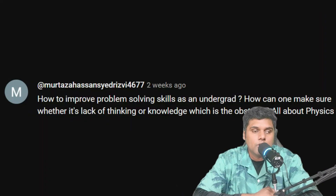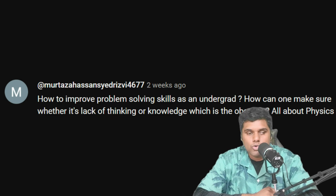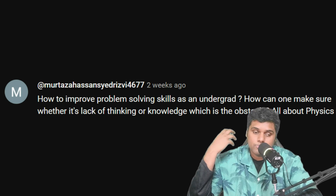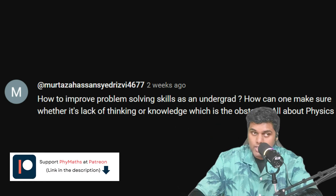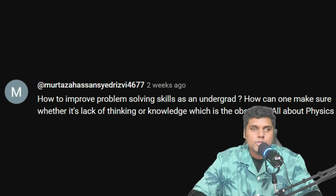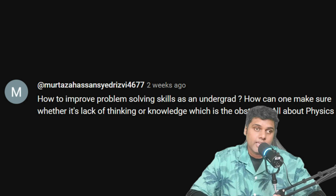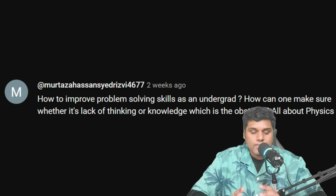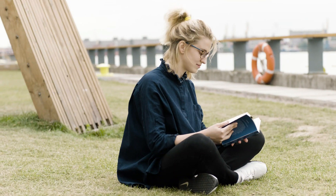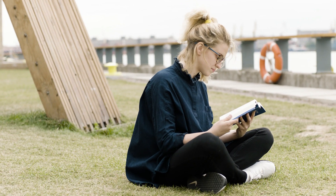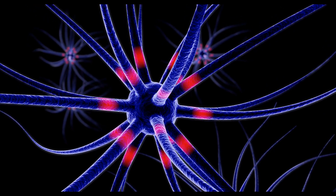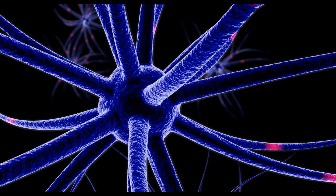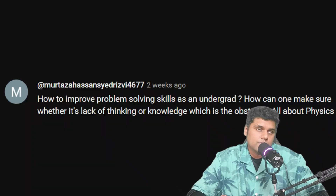The first question comes from Murtaza Hassan: how to improve problem-solving skills as an undergrad, and how can one tell whether it's a lack of thinking or knowledge that's the obstacle? First, you need to practice as much as you can because there is no replacement for practice. Sometimes it can be both — a lack of thinking and a lack of knowledge. To overcome the lack of knowledge you just need to read more, and the lack of thinking can be covered by practicing more, because when you practice you develop mental connections that were not there before.